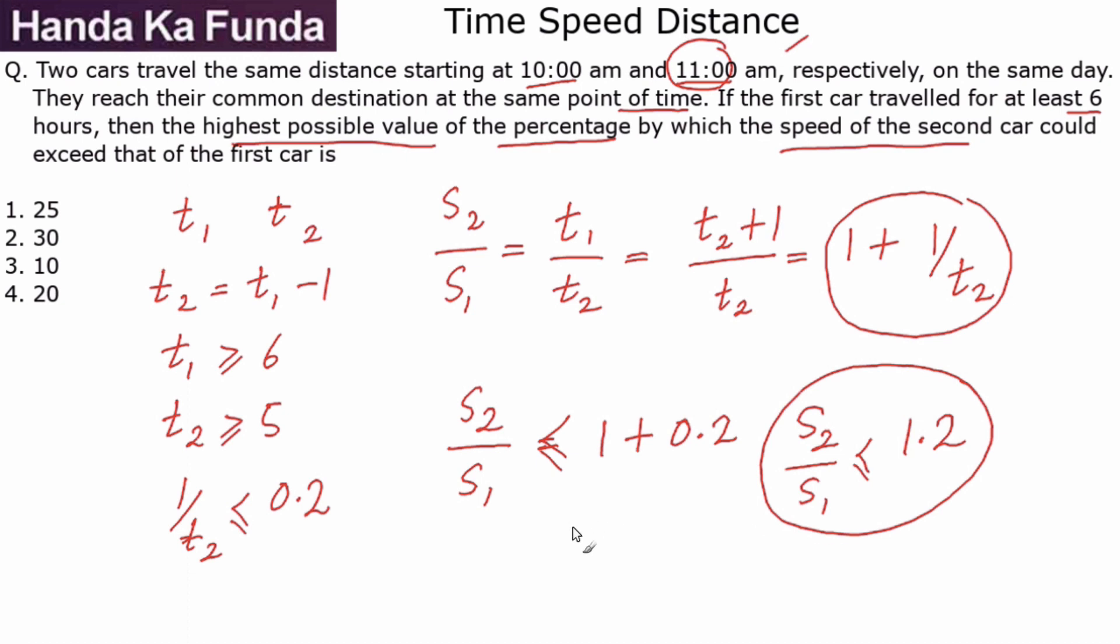Now this essentially means that speed of car 2 is higher than s₁, but the upper limit of that is only 20% higher because 20% will make it 1.2. If I had gotten this as 1.18, then my answer would have been 18% higher. Since I have got this as 1.2, that will mean s₂ is greater than s₁ by 20%, which is given to me as option 4.